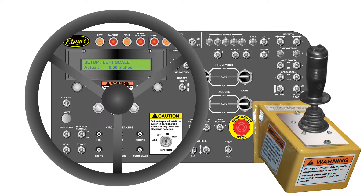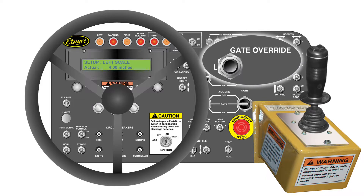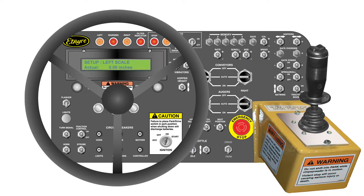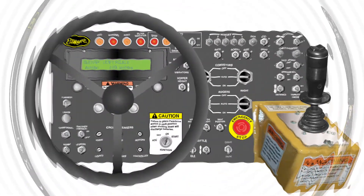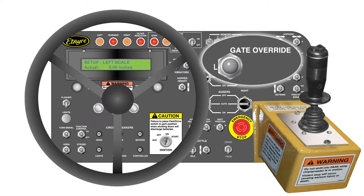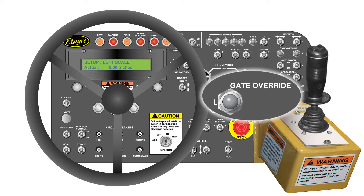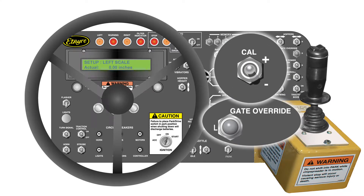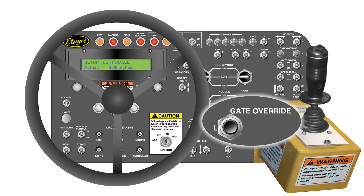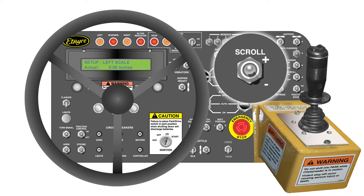This screen is used to set the actual open position of the left gate. The number will read 0 inches until the left gate override is actuated. While holding the left gate override, the number should read 4 inches. If it does not read 4, first visually verify that the gate is actually fully open. After verification, while holding the left gate override, press the cal switch to set the value to 4 inches. When the left gate override is released, the number on the screen should go back to 0. Push the scroll switch down to move to the next screen.